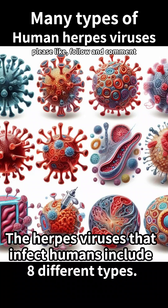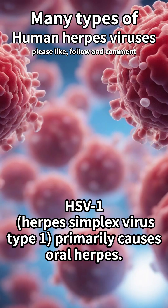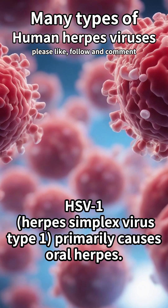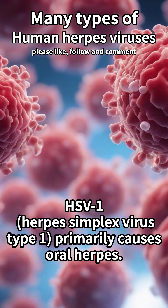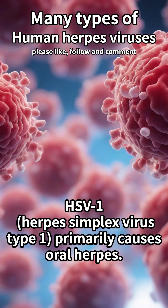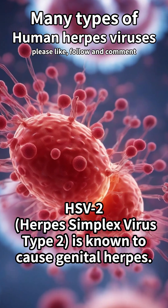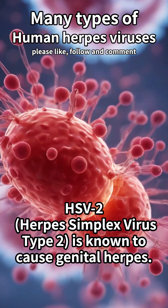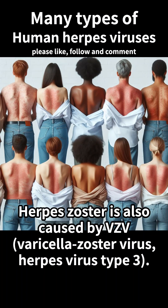The herpes viruses that infect humans include eight different types, each causing a different disease. For example, HSV-1, herpes simplex virus type 1, primarily causes oral herpes. HSV-2, herpes simplex virus type 2, is known to cause genital herpes. Herpes zoster is also caused by VZV, varicella zoster virus, herpes virus type 3.